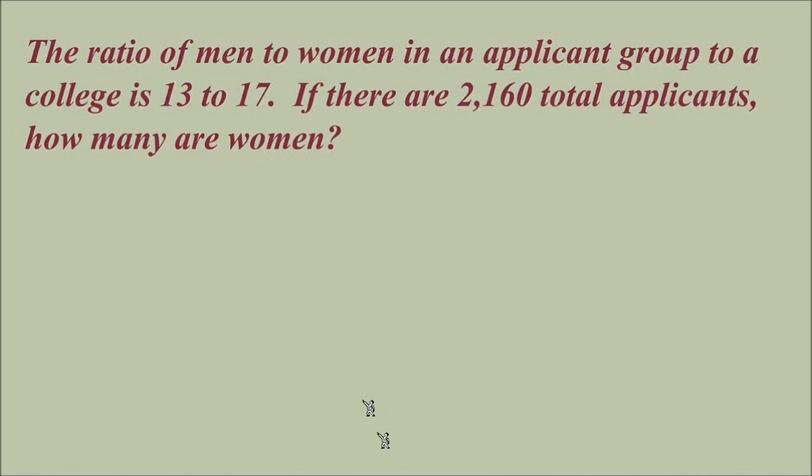Here's another example. The ratio of men to women in an applicant group to a college is 13 to 17. If there are 2,160 total applicants, how many are women? Let's set up our first ratio with the relationship that we know, this ratio of men to women, 13 to 17. I'll just jot down our units here. Men in the numerator, women in the denominator.